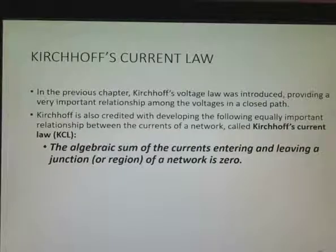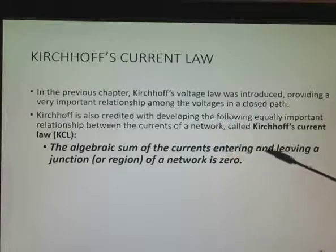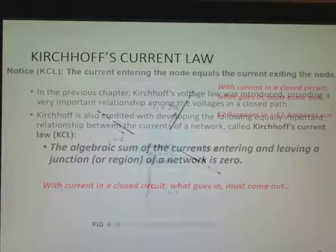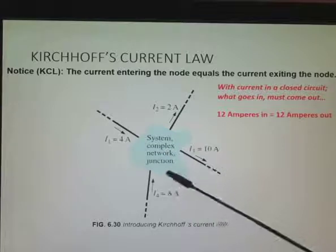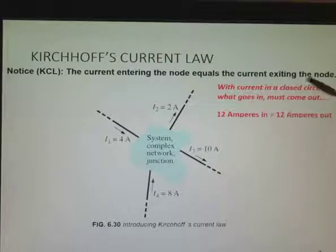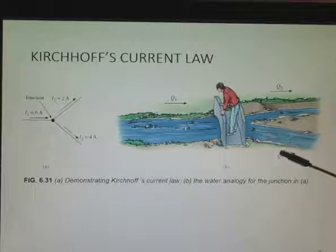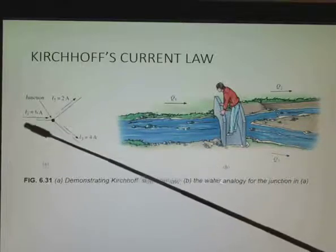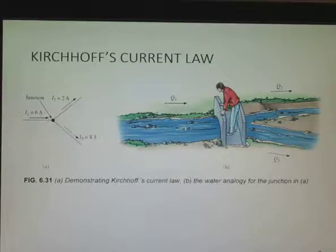So now we're going to introduce Kirchhoff's current law. We introduced the voltage law in earlier chapters. In Kirchhoff's current law, what goes in must come out. Or we could say the algebraic sum of the currents entering and leaving a junction of a network is zero because they're both equal. Let's look at this example. I have a complex system right here. And I have 4 amps going in and I have 8 amps going in. The rest are going out. They must equal 12 amps, and I see that they do: 2 amps plus 10. So with current in a closed circuit, what goes in must come out: 12 amperes in, 12 amperes out. Here's an analogy of a water stream. We have a bunch of water going here. We go to two tributaries. This one's a little smaller. This one's bigger. And this is kind of like the idea. We've got 6 amps coming into this node, and then it breaks off into 2 amps and into 4 amps. But you notice that 4 plus 2 equals 6. What goes in goes out.